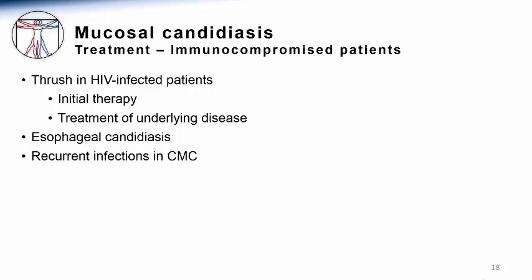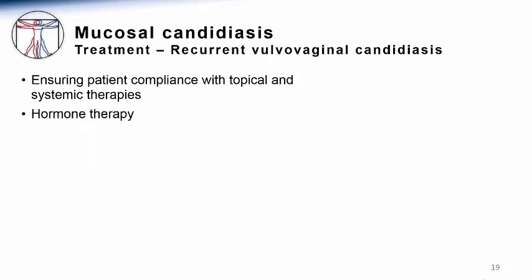Chronic mucocutaneous candidiasis and the resulting severe mucosal and skin lesions are often also treated with systemic antifungals. Oral suppression with fluconazole has been used successfully to prevent recurrent infections. One particularly difficult condition is recurrent vulvovaginal candidiasis. A small subset of patients can develop recurrent vaginal yeast infections despite initially curative therapy. These patients should be counseled about compliance with their topical and systemic therapies, but sometimes prolonged and intermittent pulse-dosed regimens are required. Hormone-based therapy can be used to mitigate the associated changes in the vaginal microbiota associated with menopause or the normal menstrual cycle. This still can be a very clinically vexing problem.